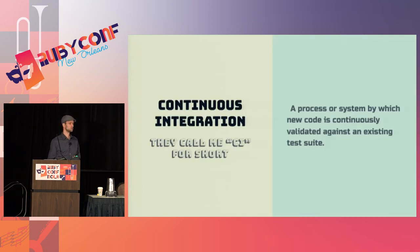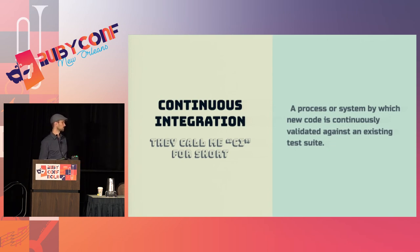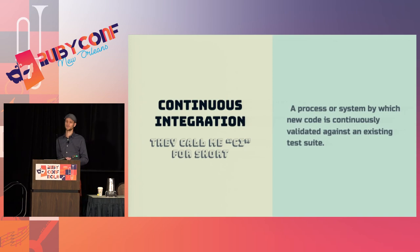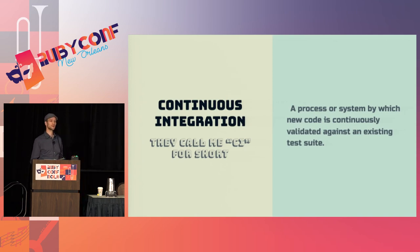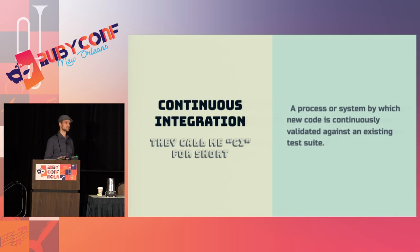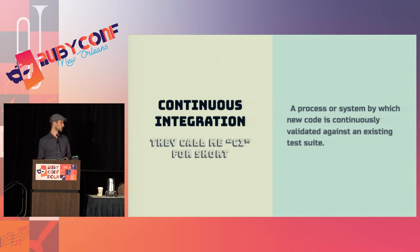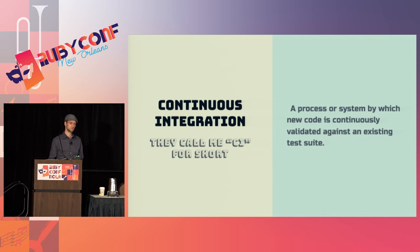For those who haven't been in the development community for a long time, we're going to be talking a lot about continuous integration. This is where you push your code up to, let's say, GitHub, and some service automatically runs your tests for you. Some examples are Travis, Codeship, CircleCI, or Jenkins.